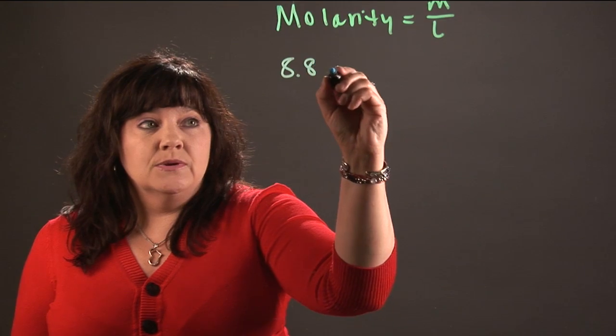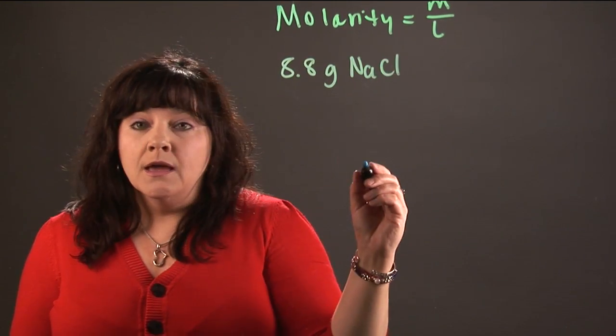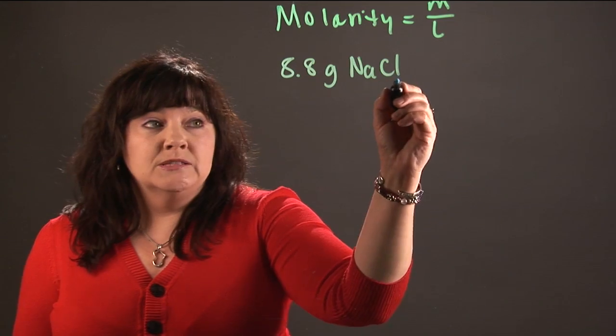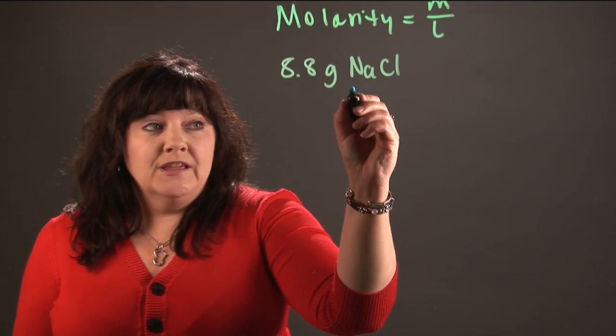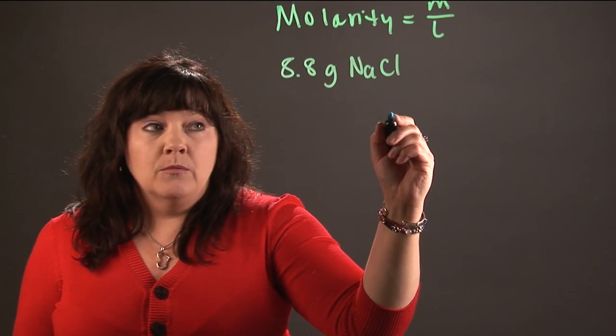So let's say for instance that we have 8.8 grams of table salt. Now table salt is made of sodium and chlorine, so we're going to have to figure out how much one mole of sodium chloride weighs in order to figure out molarity.